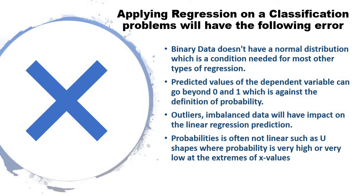Again, outliers and imbalances will have huge impact on linear regression prediction, and we've already seen that. This is also an important point - probability is often not linear, such as U-shaped curves where probability is very high or low at the extremes of values. Take the example of kids or people above 65-70 years - they are more vulnerable to disease because those are the extreme points.